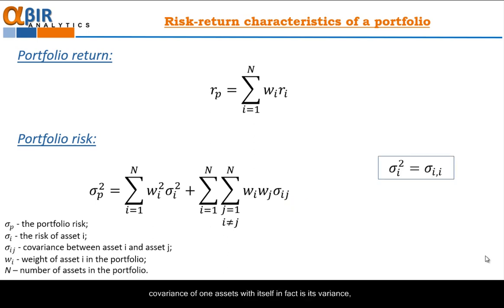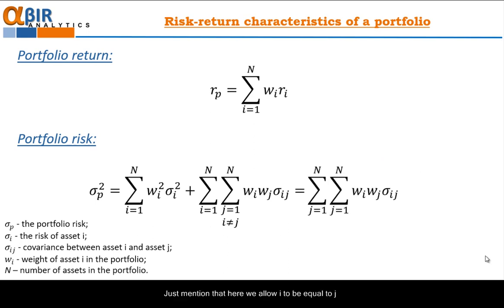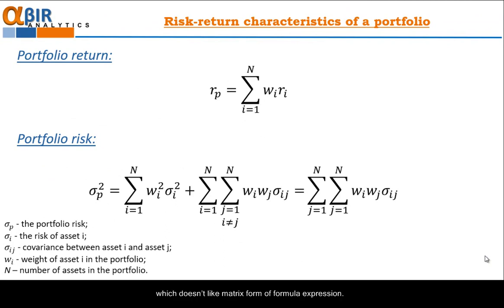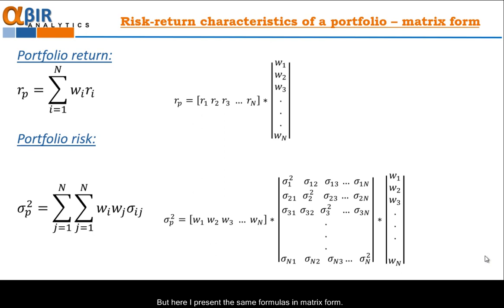If we take into account that covariance of one asset with itself is in fact its variance, then we can rewrite the formula for portfolio risk in more convenient way. Just mention that here we allow i to be equal to j and then the formula becomes more compact, but the meaning is the same. These three formulas describe the risk return characteristics of one portfolio, its return and its risk. The current format is convenient for people which doesn't like matrix form of formula expression. But here I present the same formulas in matrix form. Portfolio return is a multiplication of the matrix of individual return of the asset and the matrix with their weights. Portfolio risk involves again the matrix of weights of the assets.